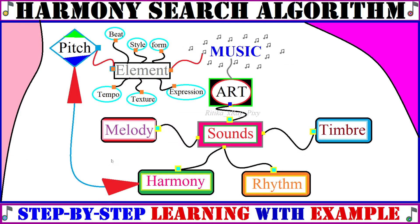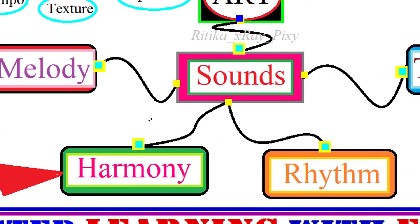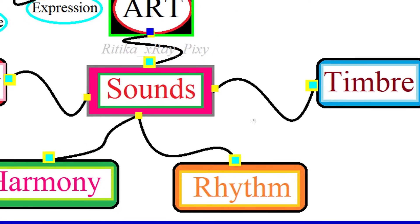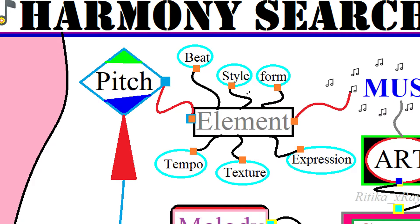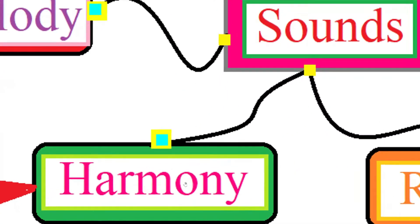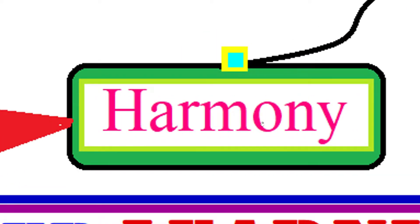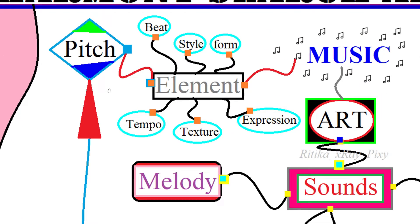Music is an art of sound arrangements in time. Elements include sounds such as melody, rhythm, harmony, and timbre. Other elements include style, beat, tempo, texture, expression, and pitch. This algorithm is inspired by music harmony.